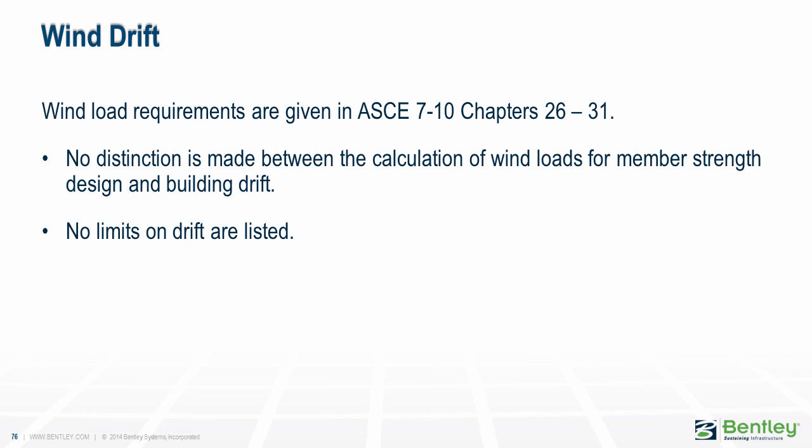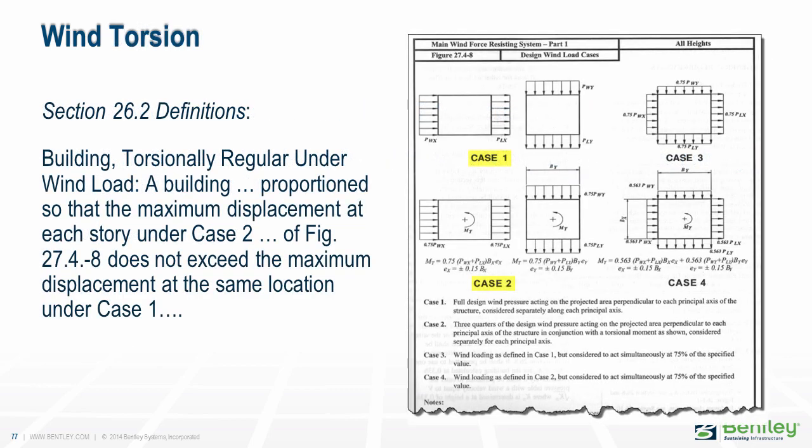Lacking specific code requirements, it is important that engineers consider the use of the structure and the likely result of failure to provide adequate resistance to wind forces. Whereas seismic events are rare, wind is a much more common occurrence and is much more likely to be perceived negatively by an occupant. When investigating wind drifts, it is customary to measure the drifts at the extreme ends of the building, such as at the building corners, rather than at the centers of mass. I want to direct your attention to something new in ASCE 7 in response to complaints about all of the wind load cases required by the code.